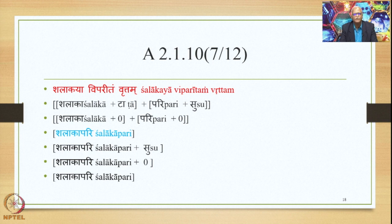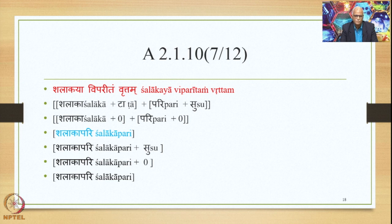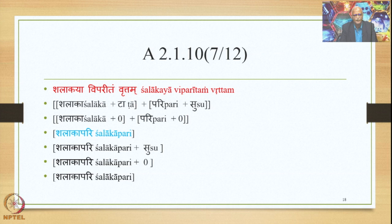Similarly, Shalakaya Viparitam Vrttam gives the Alaukika Vigraha Shalaka plus Ta plus Pari plus Su. This becomes the Samasa, then the Pratipadika, and we apply Supodhatup Pratipadika Yoho to delete both Sups, giving Shalaka plus ∅ plus Pari plus ∅. So we get Shalakapari as the finally derived compound output. Adding Su and deleting it by Avyayadapsu Pah, we get Shalakapari, which means Shalakaya Viparitam Vrttam — the dice behaved in an opposite manner resulting in the loss.